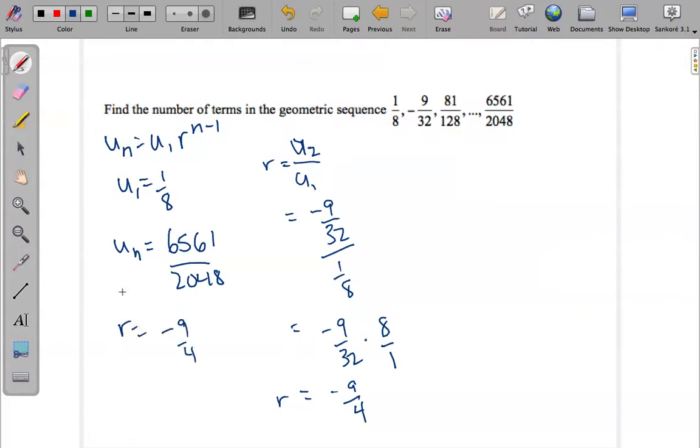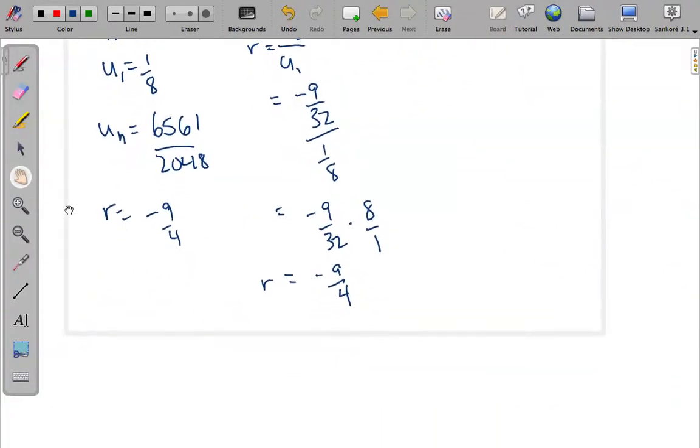So I have all these values. I need to find n that will tell me the number of terms. So I can say that 6561/2048 = u_1, which is 1/8...